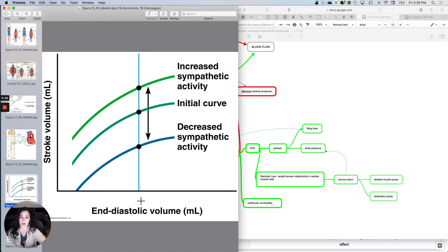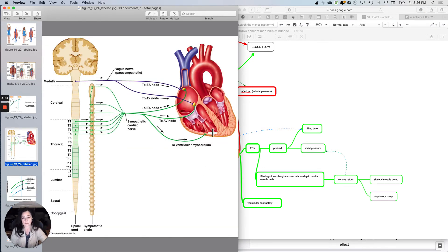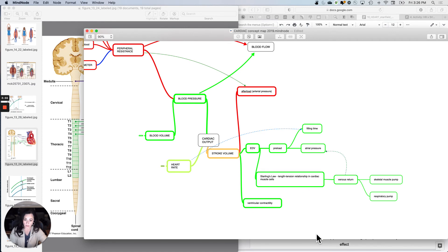This one says keep the volume constant and just squish it harder because the sympathetic nervous system goes to the walls of the ventricles, and that is ventricular contractility, which is independent of volume. Ventricular contractility is independent of the volume.